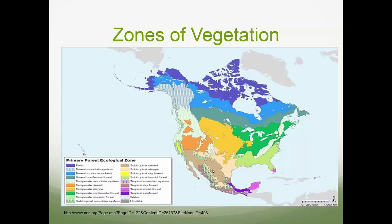When we think of individuals, we can think of them at different levels — the stand, the forest, and the landscape. When thinking about all these different levels, it helps to be able to classify them. We can think about them as zones of vegetation. This figure shows the different zones of vegetation within North America, and right now in Minnesota and the Lake States, we're mostly in the temperate continental forest.